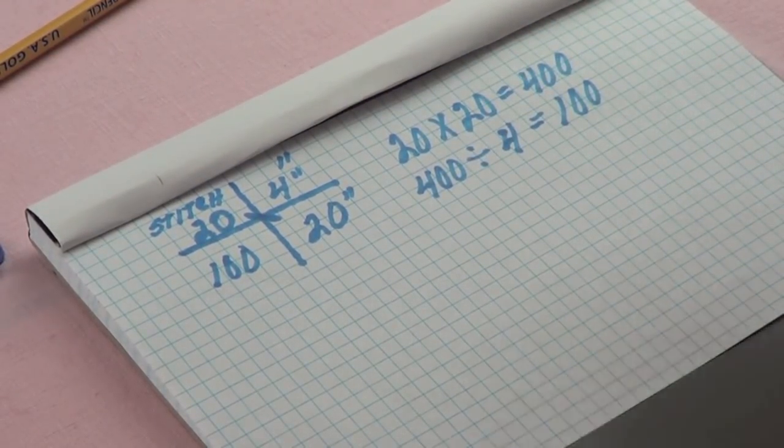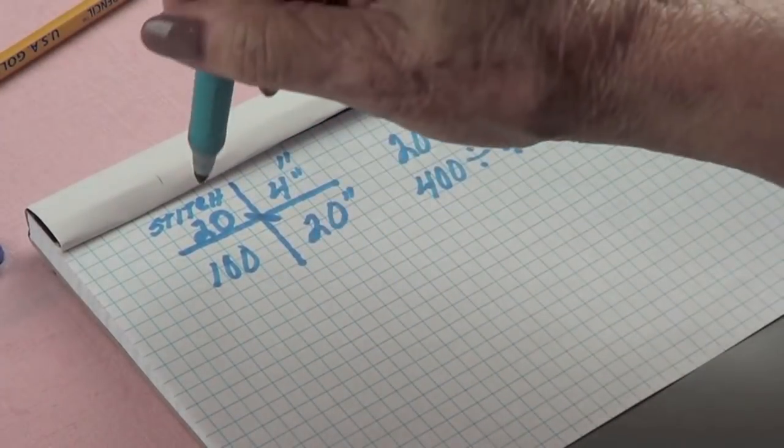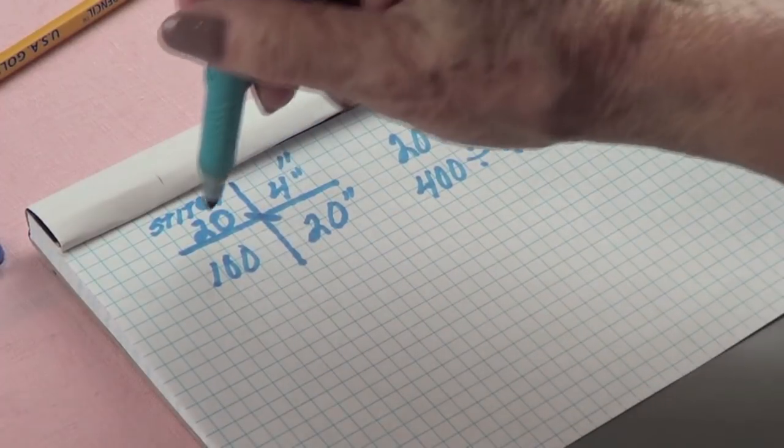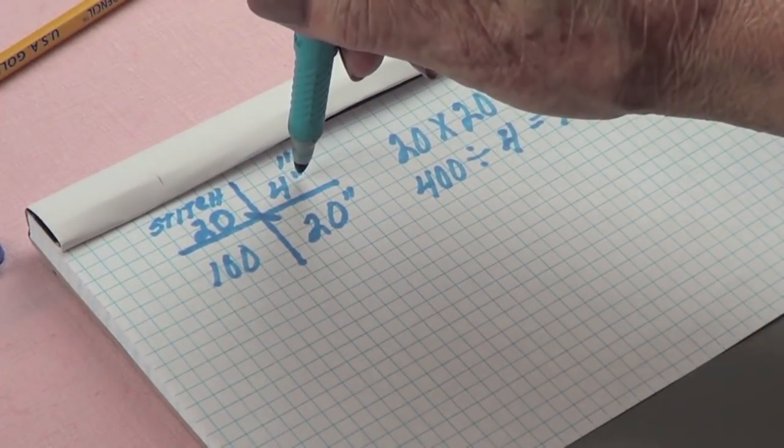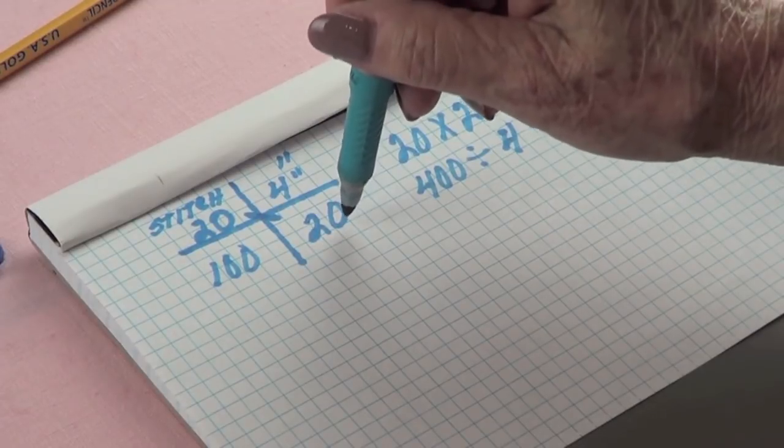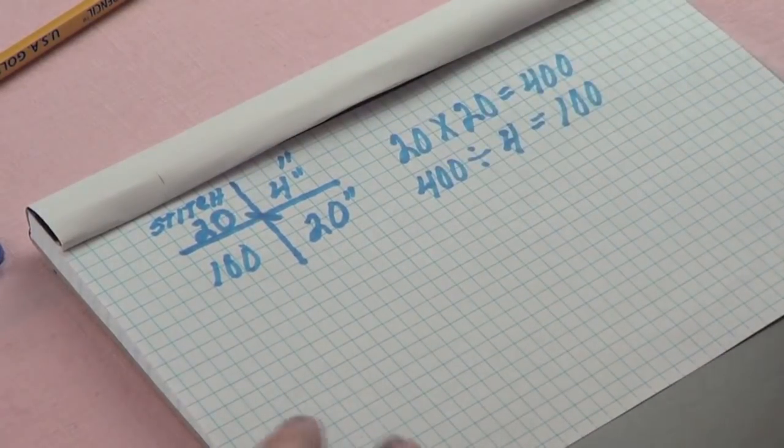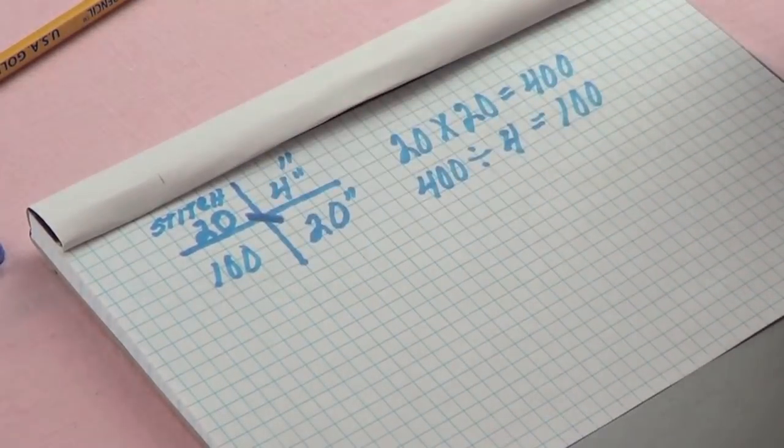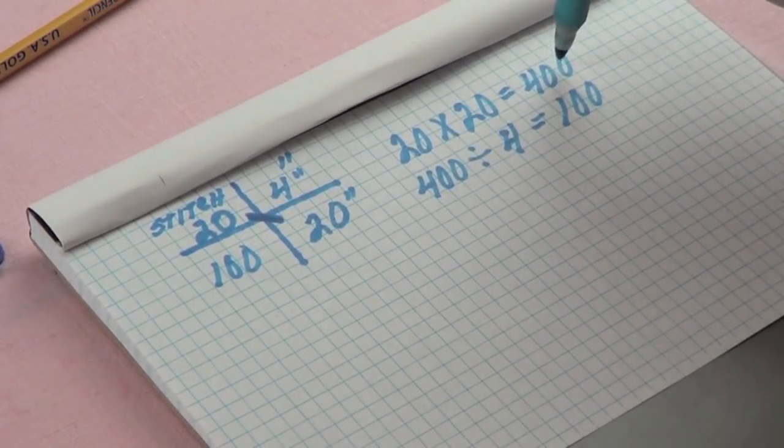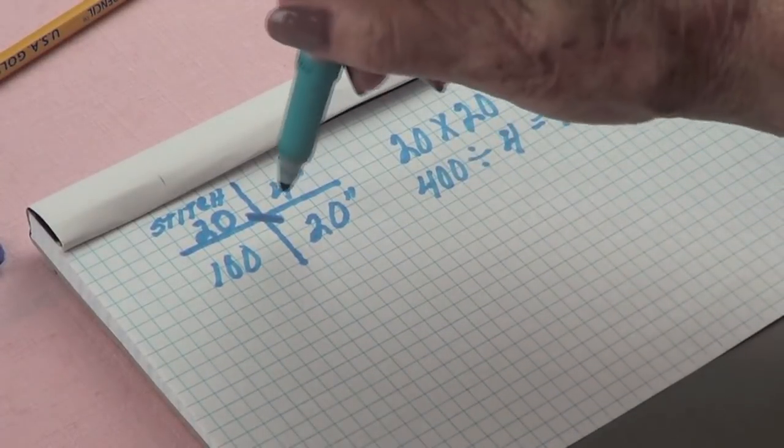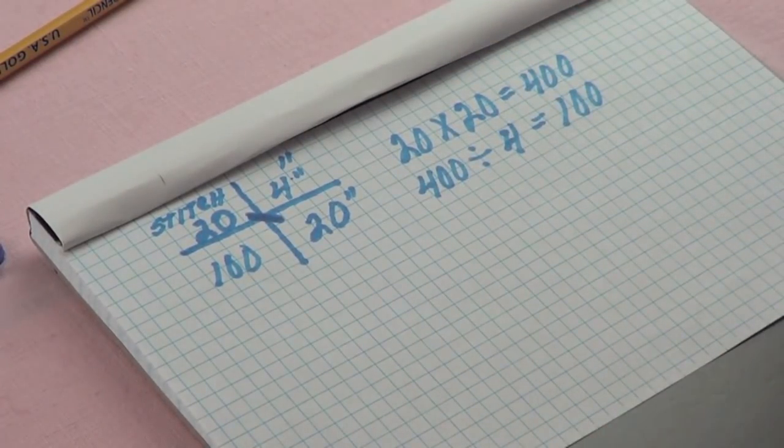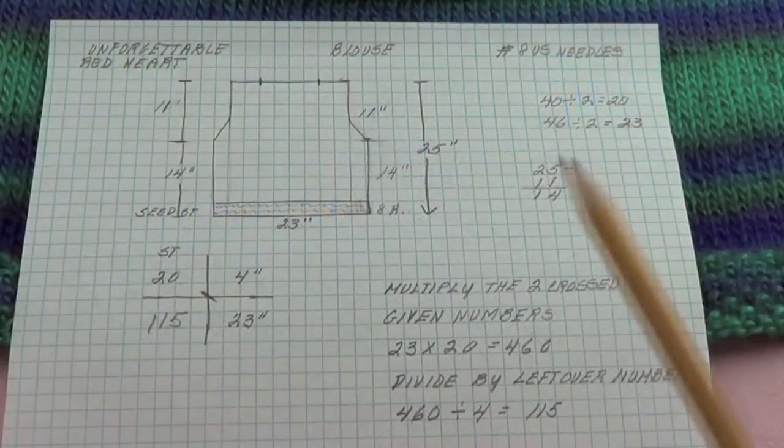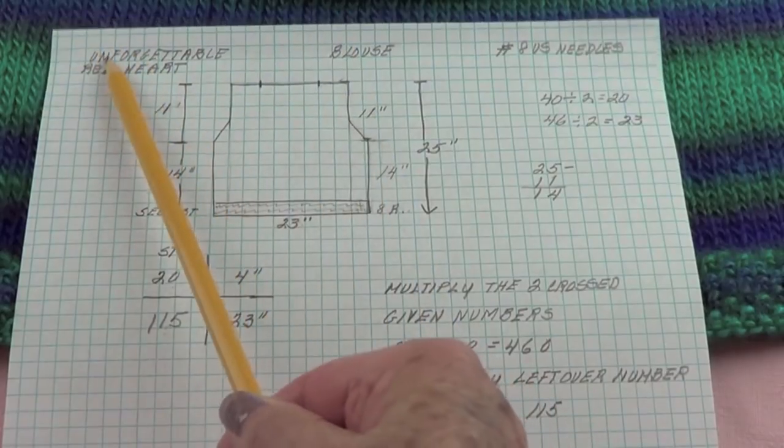So I need 100 stitches to give me 20 inches. So that is the only trick: you do your cross, you put how many stitches you have, how much 20 stitches measures, how much you want it to measure, and like that you come up with that number. So multiply the two crossed given numbers, once you have the result you divide it by the leftover number and you have your answer.